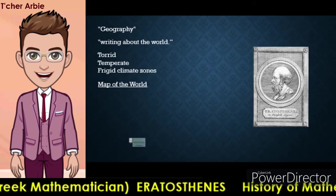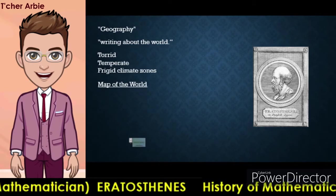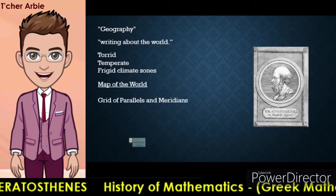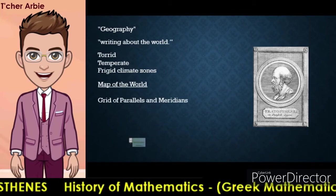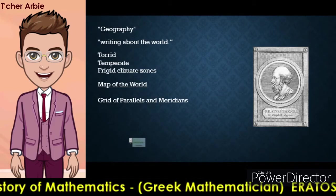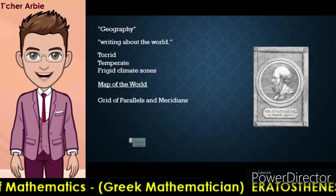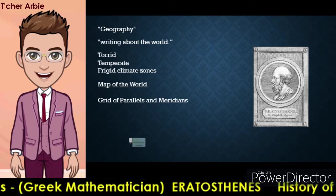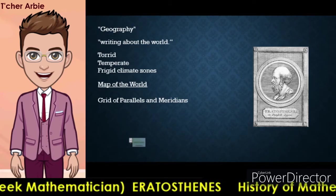Eratosthenes' work introduced the concept of torrid, temperate, and frigid climate zones. His map of the world, though highly inaccurate, was the first of its kind, picturing a grid of parallels and meridians used to estimate distances between different locations. Though Eratosthenes' original geography did not survive, modern scholars know what it contained thanks to reports by Greek and Roman historians.